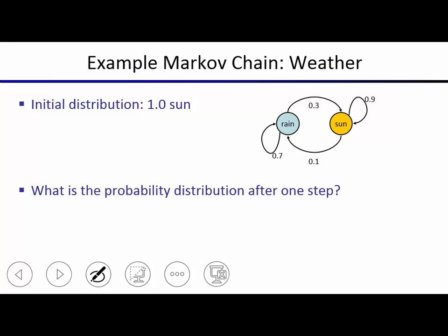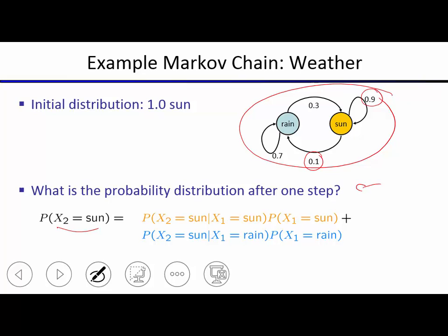Our initial distribution is 100% sun. At the next time step, the probability of sun is 0.9 and rain is 0.1. In general, the probability of sun at time two is a sum over all possible states at time one, where each state's probability is weighted by the probability of transitioning into sun from that state. This is essentially our first algorithm — the mini forward algorithm.